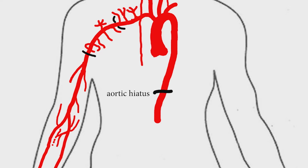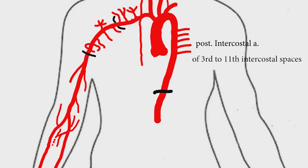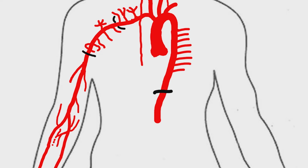At the level of the 12th thoracic vertebra, it gives rise to 9 pairs of posterior intercostal arteries of the 3rd to 11th intercostal spaces. It also gives a pair of subcostal arteries and a pair of superior phrenic arteries.